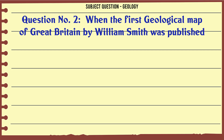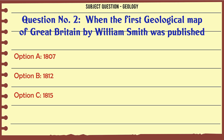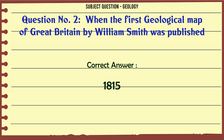When was the first geological map of Great Britain by William Smith published? A. 1807. B. 1812. C. 1815. D. 1821. The correct answer is 1815.